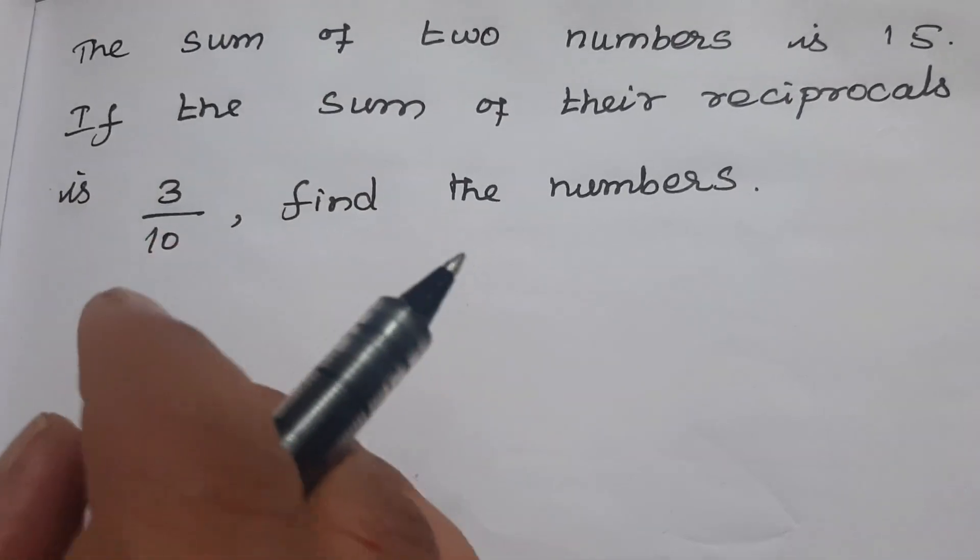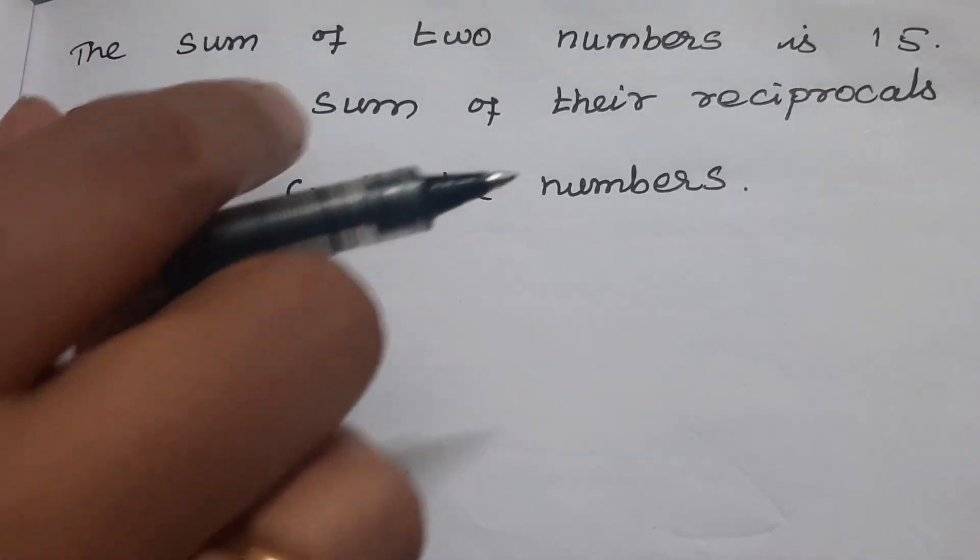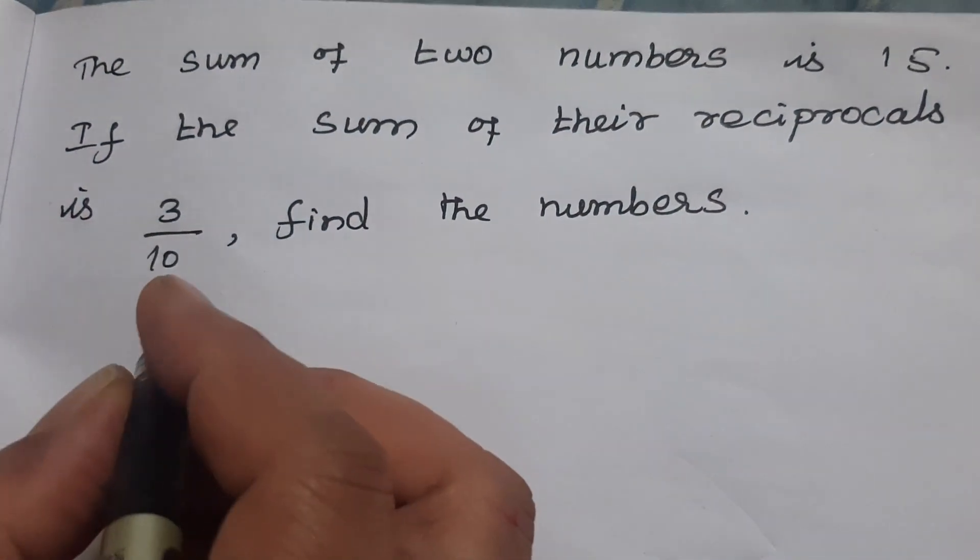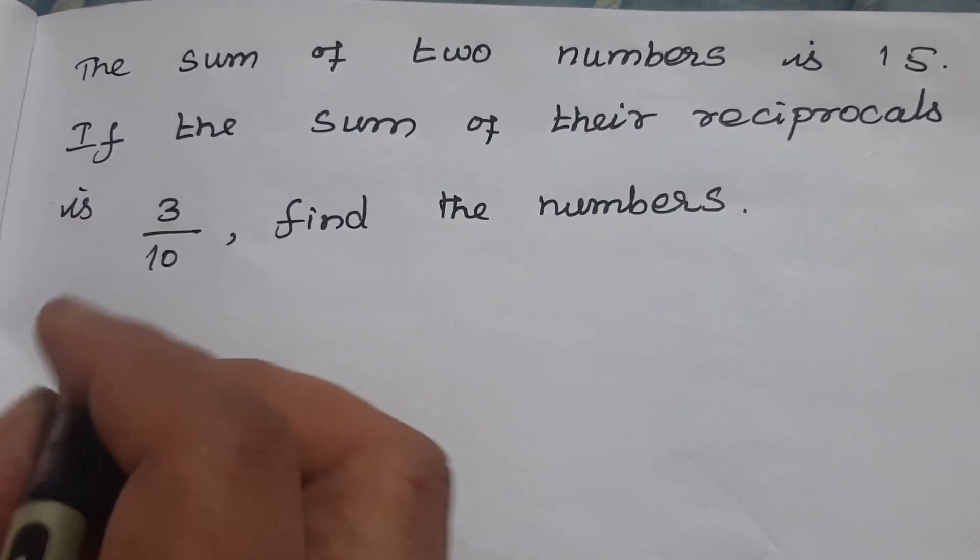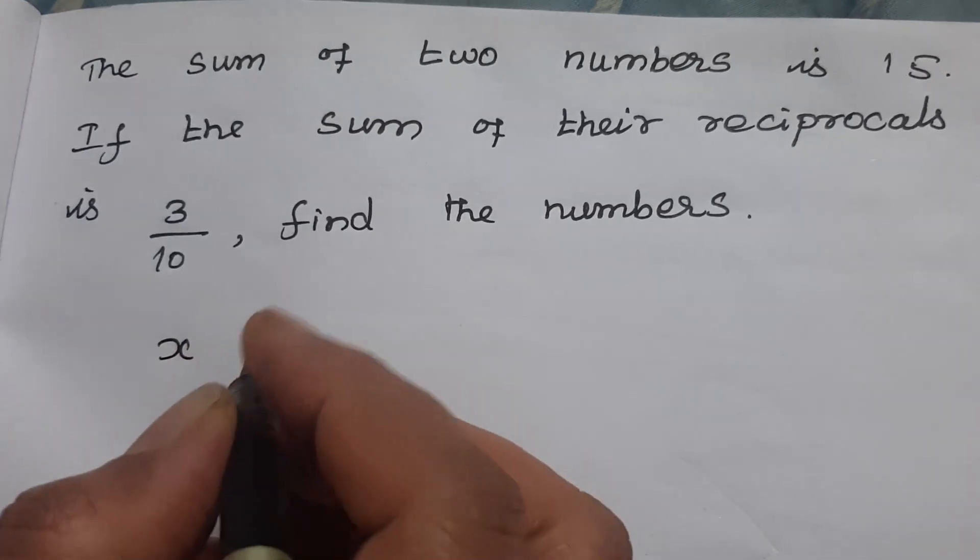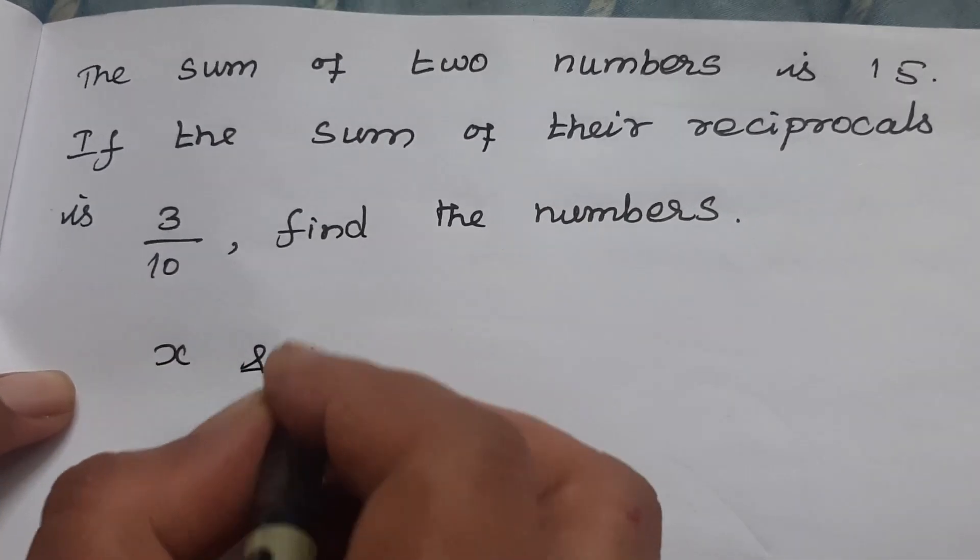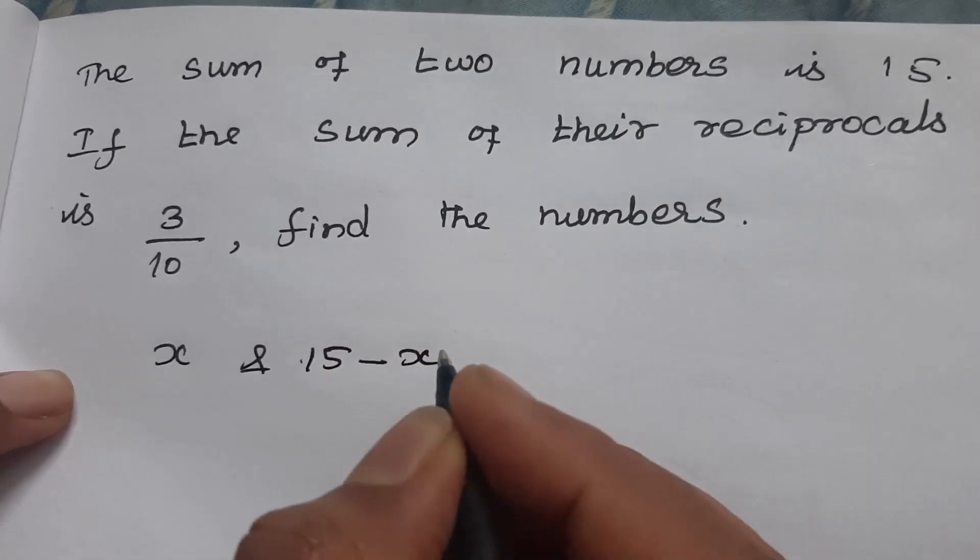Here it is given in quadratic equations. First, the sum of two numbers is 15. Let one number be x, so the other number is 15 minus x.